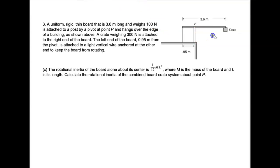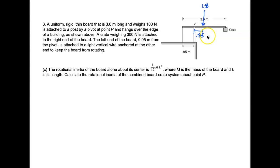The other thing we need to do is take a look at some distances because the distances can be really confusing for this. This whole thing is 3.6 meters long, so half of 3.6 is going to be 1.8. So this position is 1.8. This position is 0.95 as measured from the left side. We also need the distance from here to here, which is going to be 1.8 minus 0.95, giving you 0.85. Then we have a distance from the pivot point over to the crate, which is 1.8 plus 0.85, so the distance to the crate is 2.65.